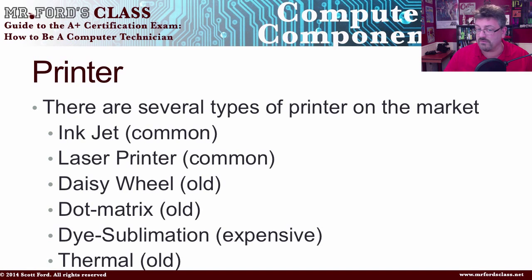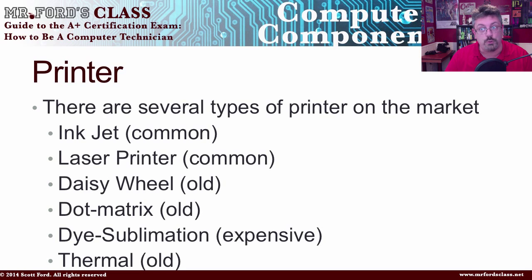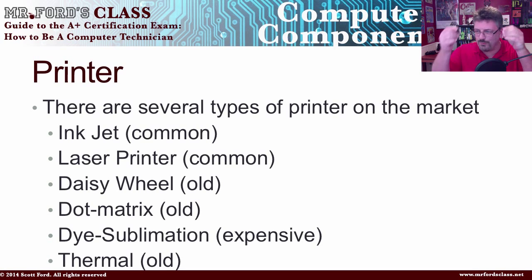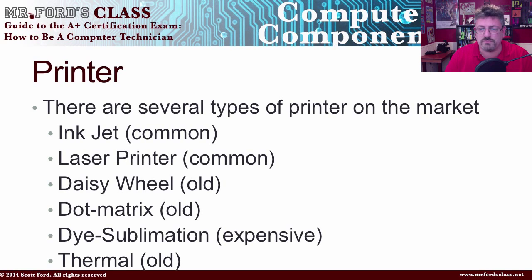If you walk in and somebody has a laser printer at their home, that's fine — I'm just being general here. You have the daisy wheel, which is old technology. You have the dot matrix, also old technology — the old paper with the little holes on the side. Dye sublimation printers are expensive but produce very high quality outputs like images and pictures.